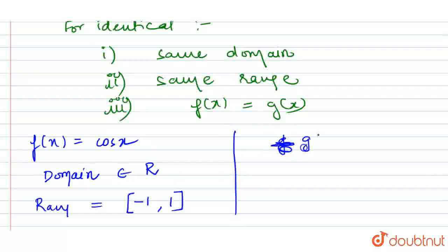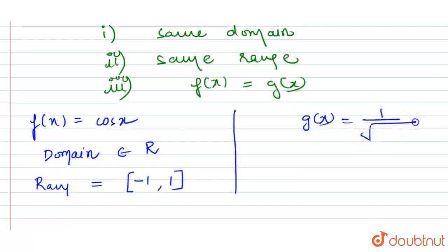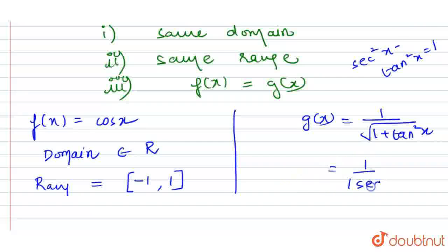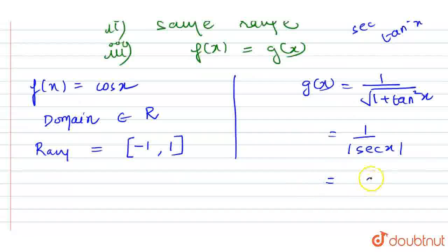The second function is g(x) = 1 upon root under 1 plus tan squared x. Using the identity sec squared x minus tan squared x equals 1, we get that 1 plus tan squared x equals sec squared x. So 1 upon root of sec squared x gives us 1 upon mod of sec x, and since 1 upon sec x is cos x, this becomes mod of cos x.